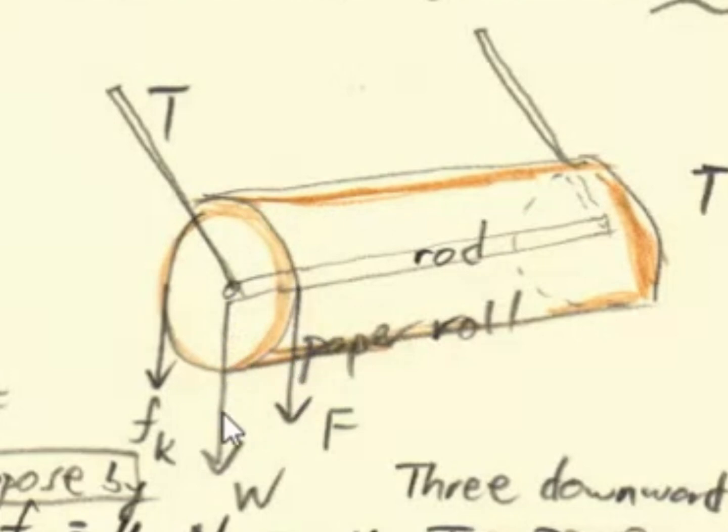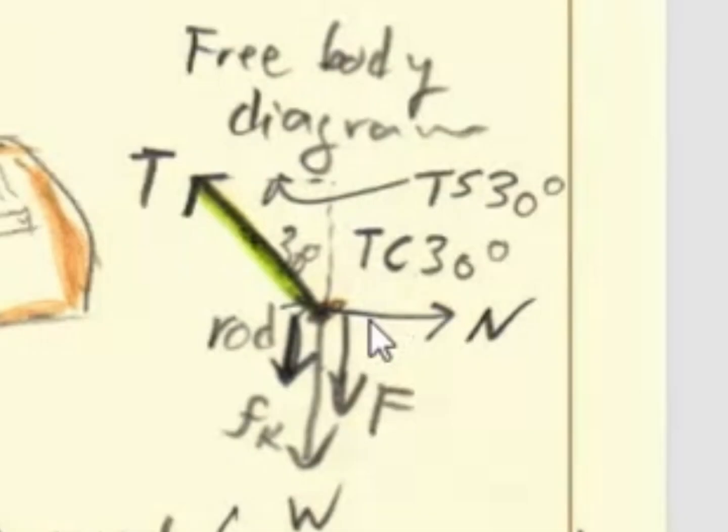the weight of the roll of paper, as well as the force of kinetic friction. Here's the free body diagram that illustrates all these forces together with the normal force. The normal force is coming from the wall. The wall is going to exert a normal force.